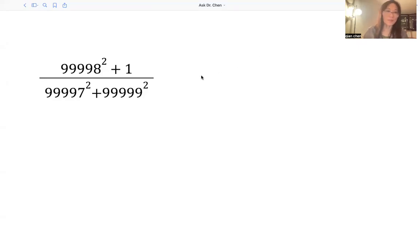We like to simplify this, and we observe we see three big numbers: 99998, 99997, and 99999.